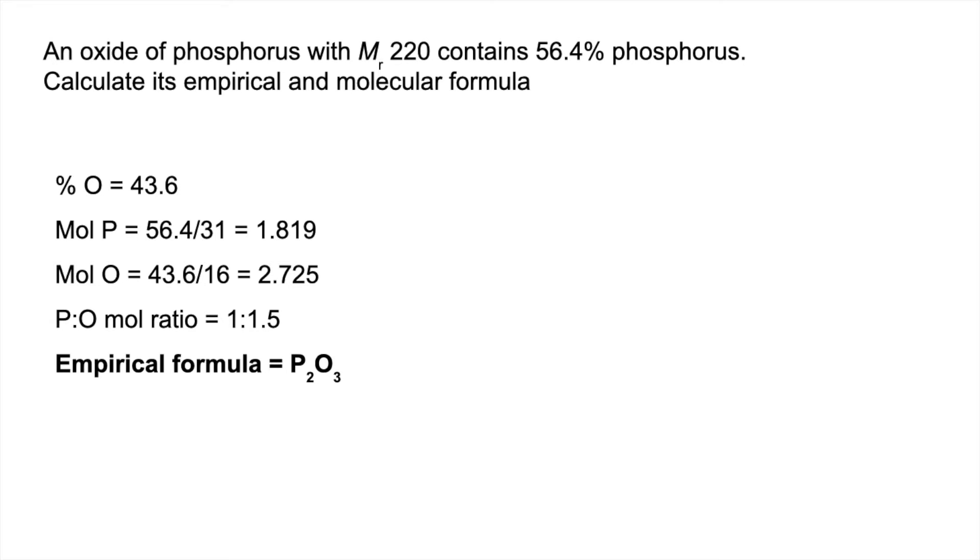To get to the molecular formula, we work out the formula mass of that, which is 110, and compare the molecular mass with that. So 220 over 110 is 2. Obviously, the molecular formula is double the empirical: P4O6.